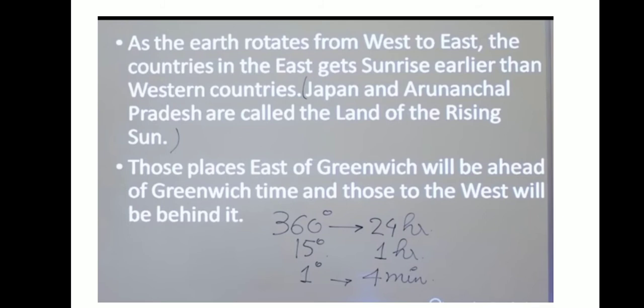The countries in the east get sunrise earlier than western countries. Japan and Arunachal Pradesh are called the land of the rising sun.